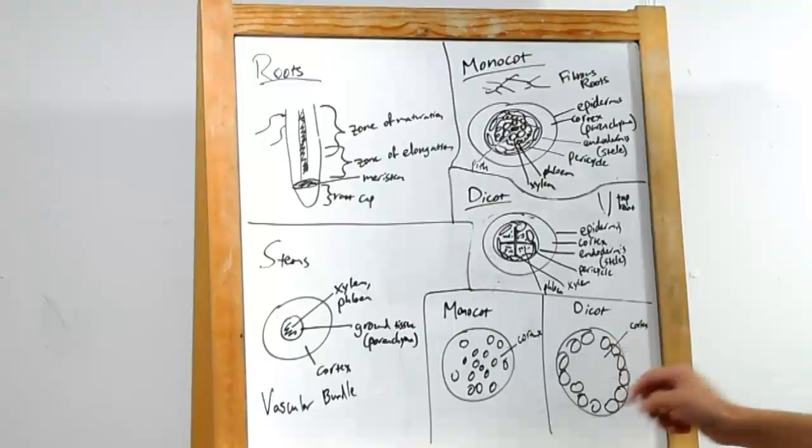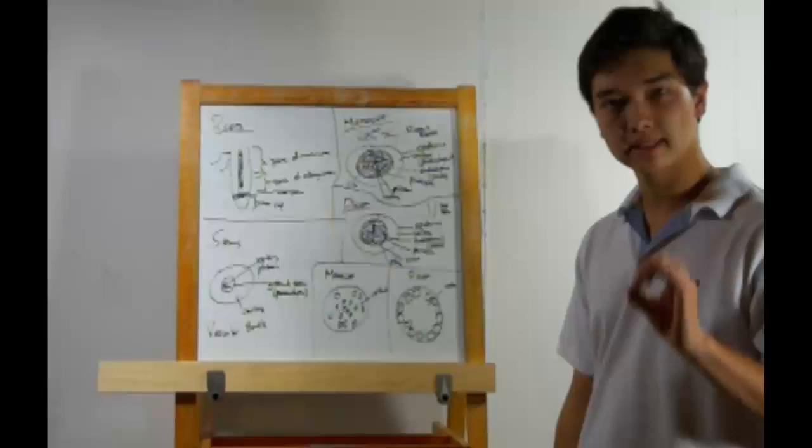Now, everything that is not going to be a vascular bundle in the stem is going to be a cortex. It's going to be ground tissue, parenchyma, storage again. Okay, that's stems. Let's move on to leaves.